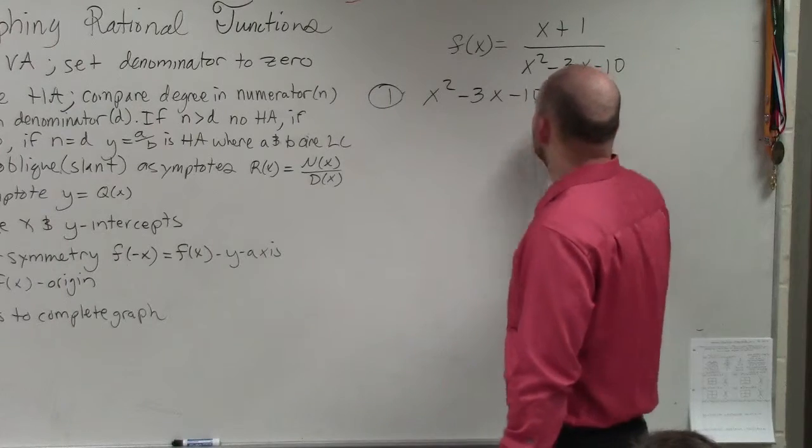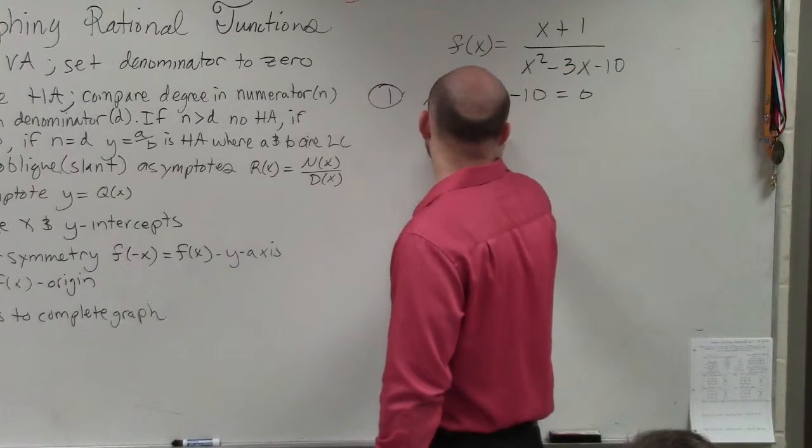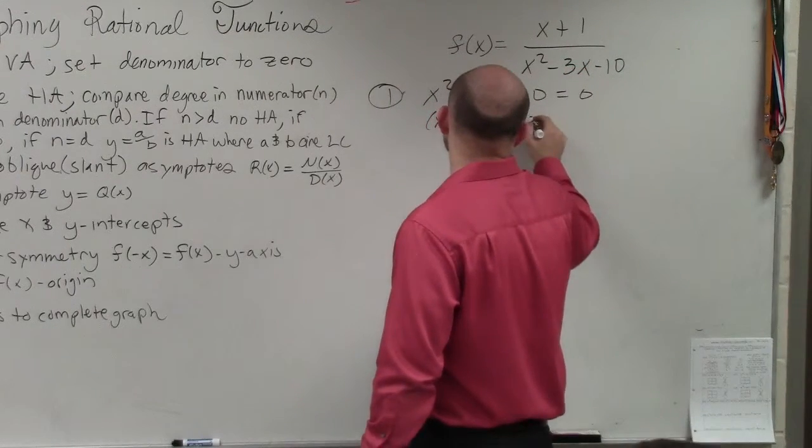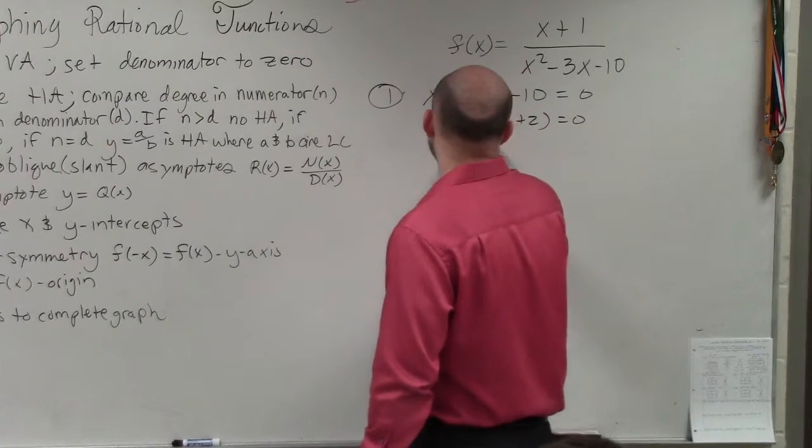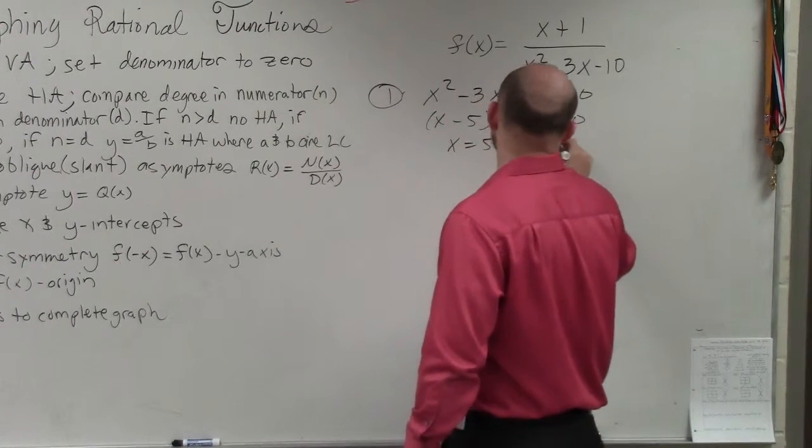So when I do that, I get x minus 5 times x plus 2 equals 0. That means x equals 5, x equals negative 2.